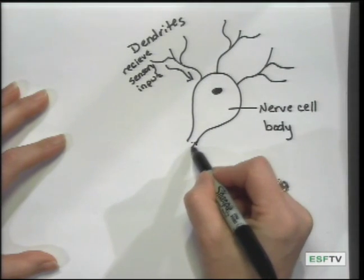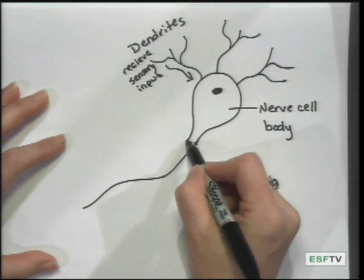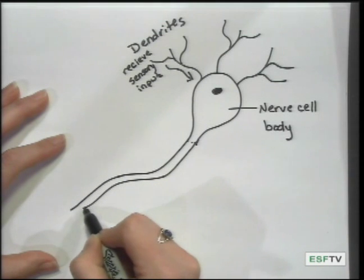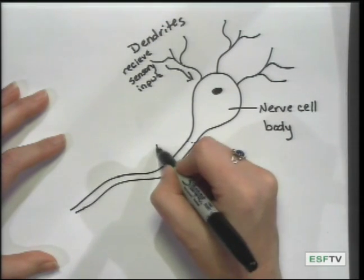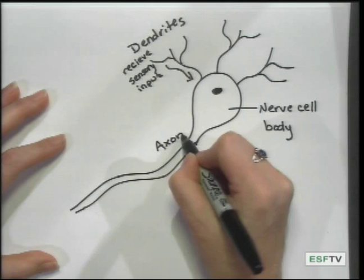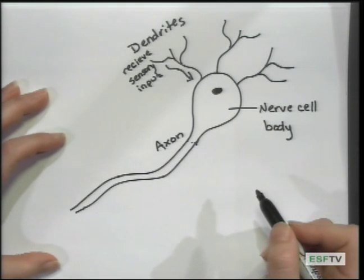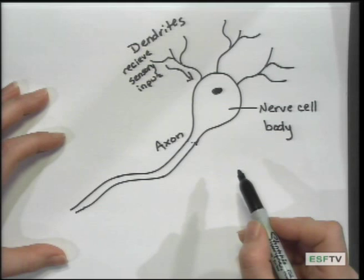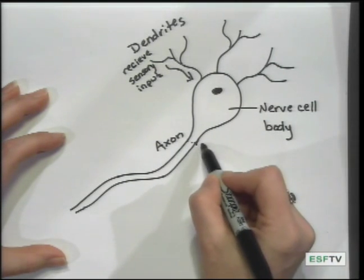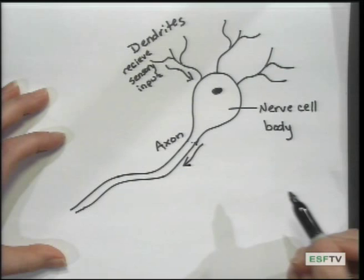There's another process coming off of the nerve cell body, and this is called the axon. Axons are single, long cytoplasmic extensions that conduct impulses away from the nerve cell body.